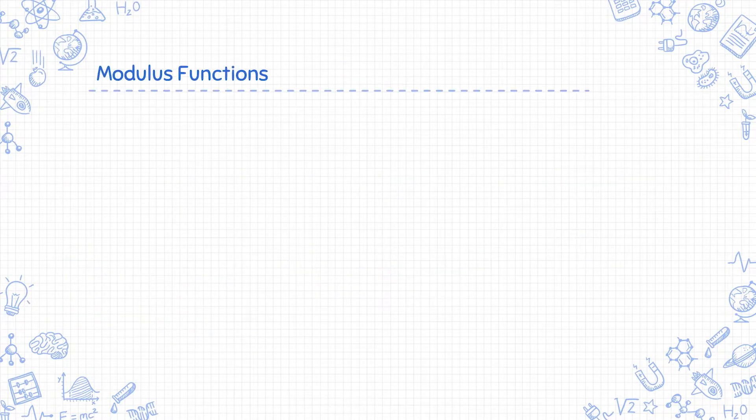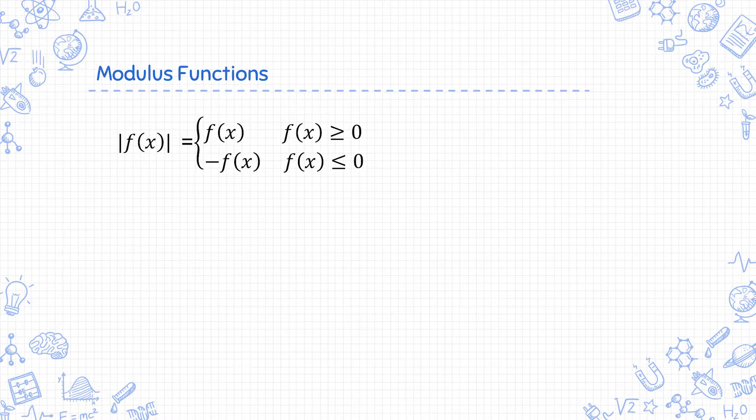A modulus function is the function where you take the absolute value. It is denoted by the absolute value symbol, these two vertical lines here. You can think of it as the magnitude or the size of the number and it is defined as such.